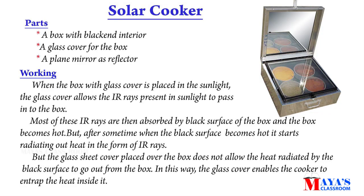Solar cooker parts: a box with a blackened interior, a glass cover for the box, and a plain mirror as a reflector. When the box with a glass cover is placed in sunlight, the glass cover allows infrared rays present in sunlight to pass into the box. Most of these IR rays are absorbed by the black surface, making the box hot. The glass sheet does not allow the heat radiated by the black surface to escape, enabling the cooker to trap heat inside.